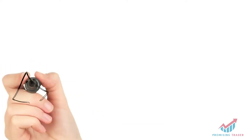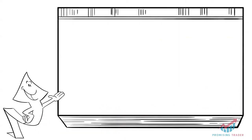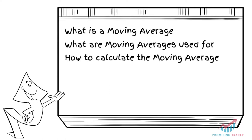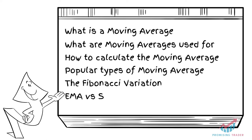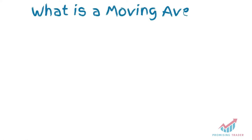Before continuing, here's what we're going to talk about in this tutorial: What is a Moving Average? What are Moving Averages used for? How to calculate the Moving Average? Popular Types of Moving Averages, the Fibonacci Variation, EMA vs. SMA — in other words, Exponential Moving Averages vs. Simple Moving Average — and a simple EMA crossover strategy.